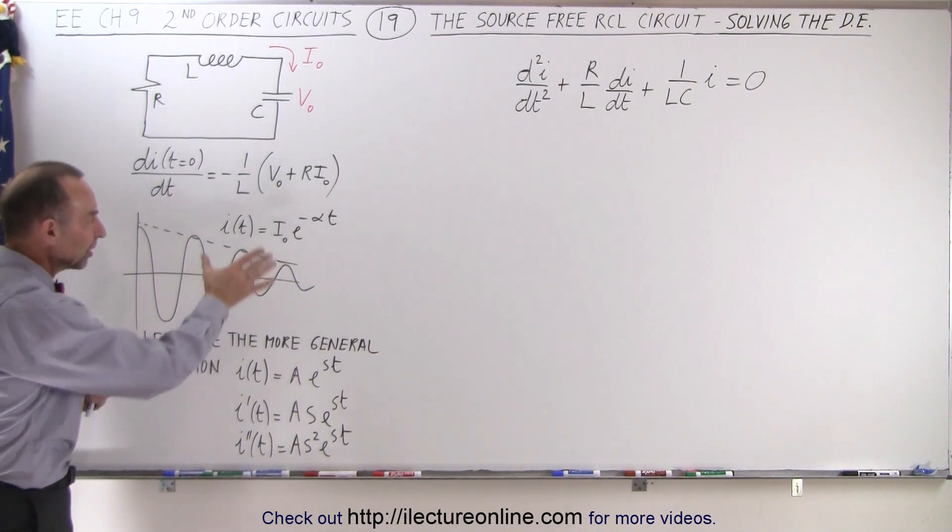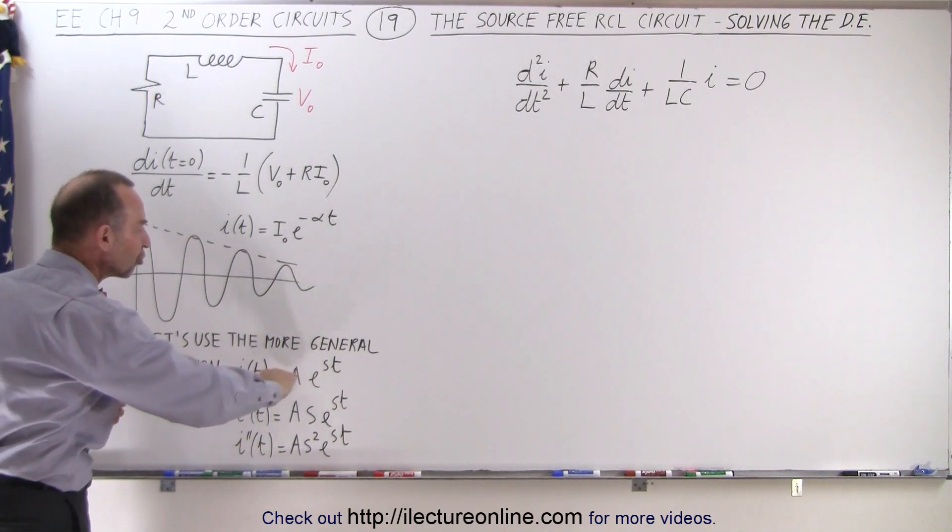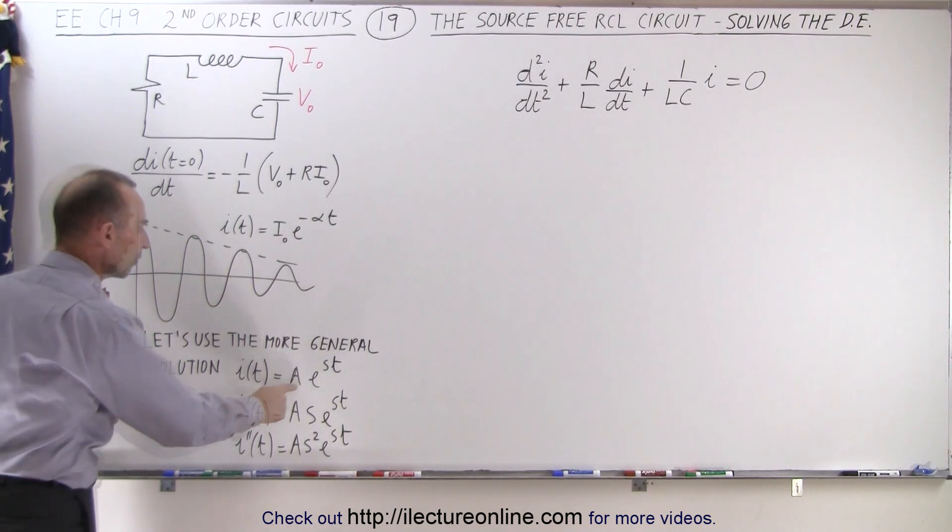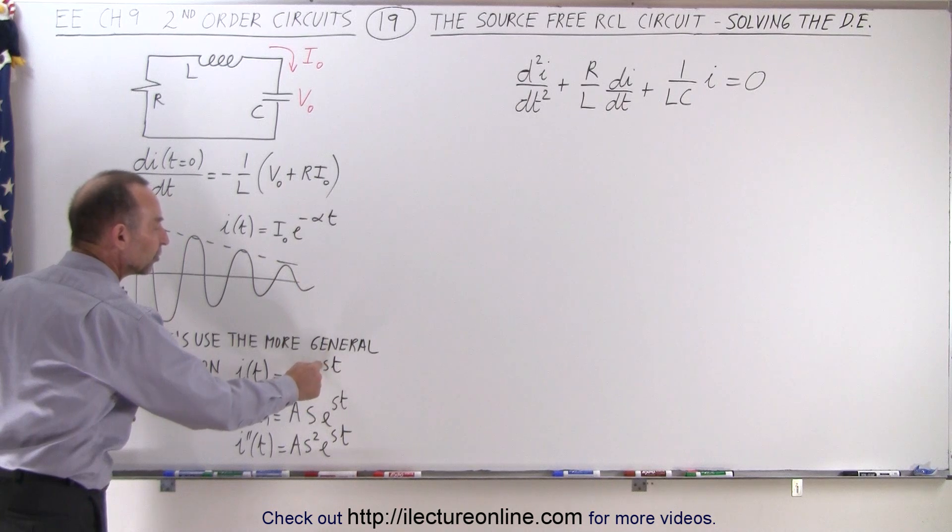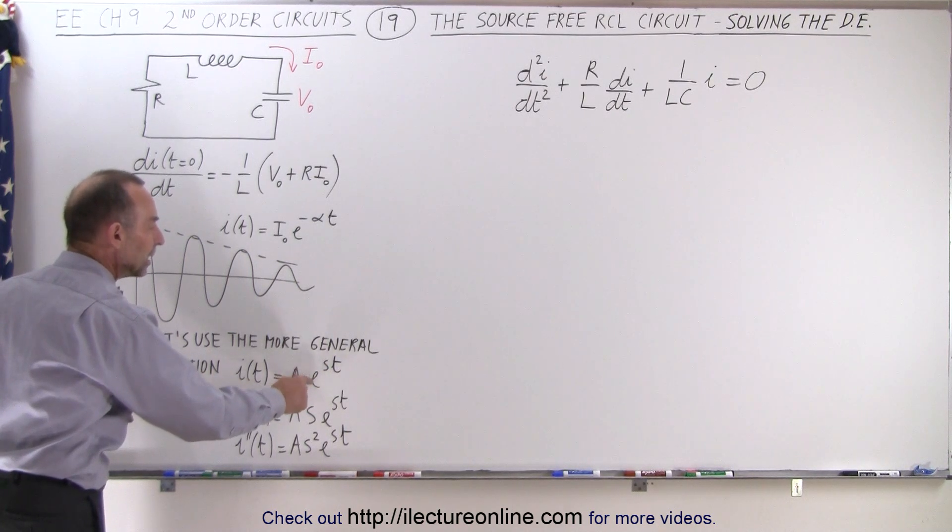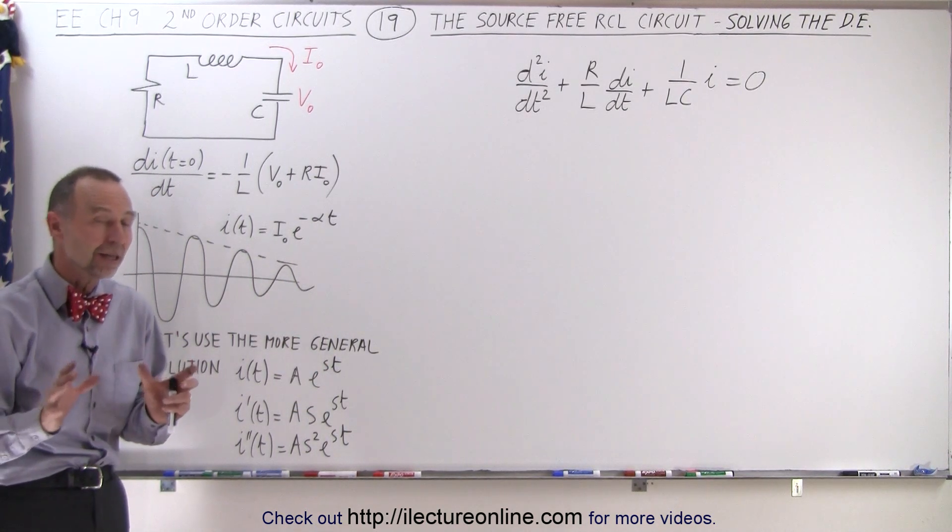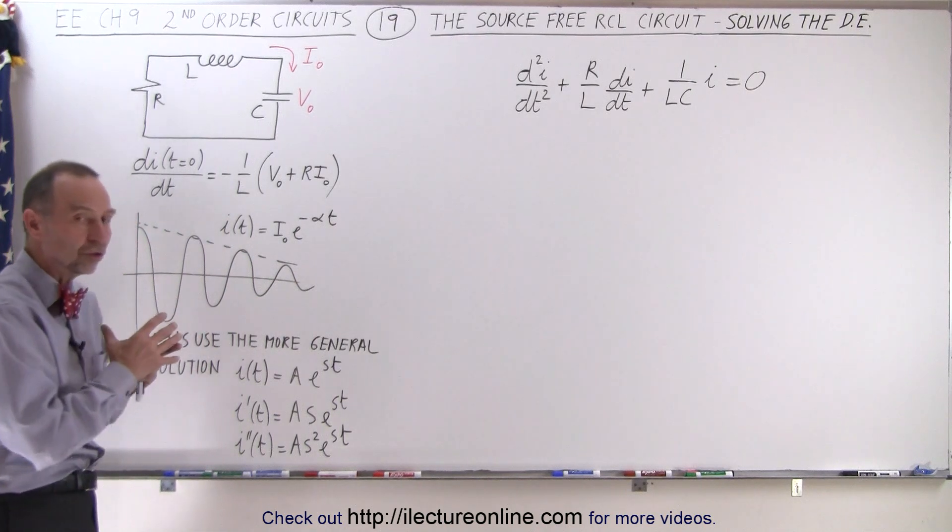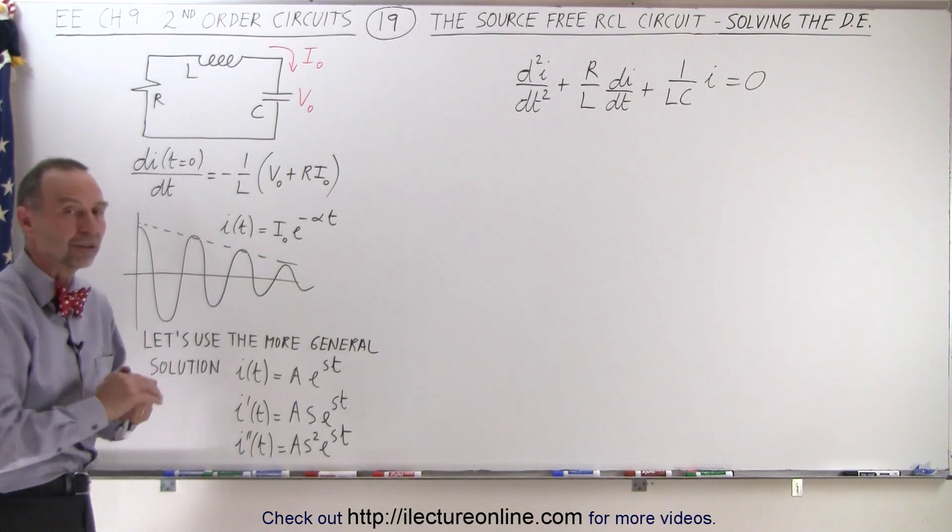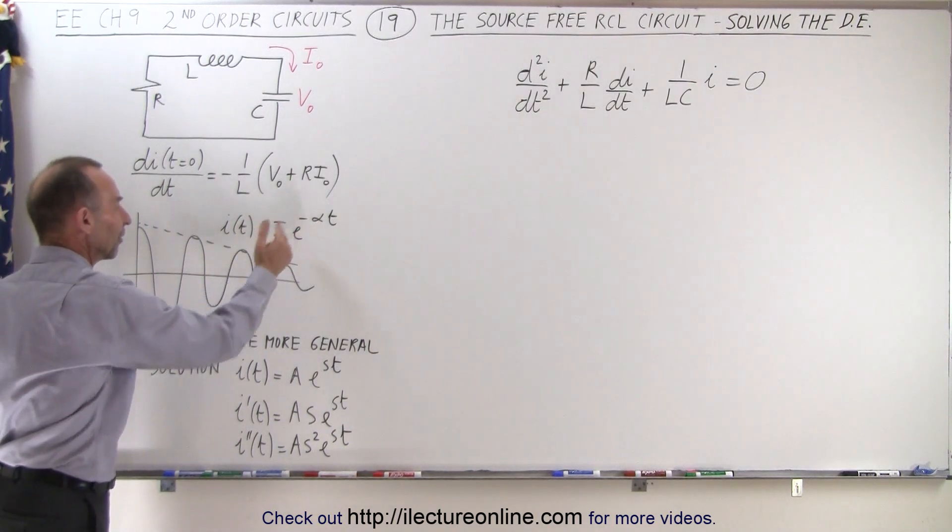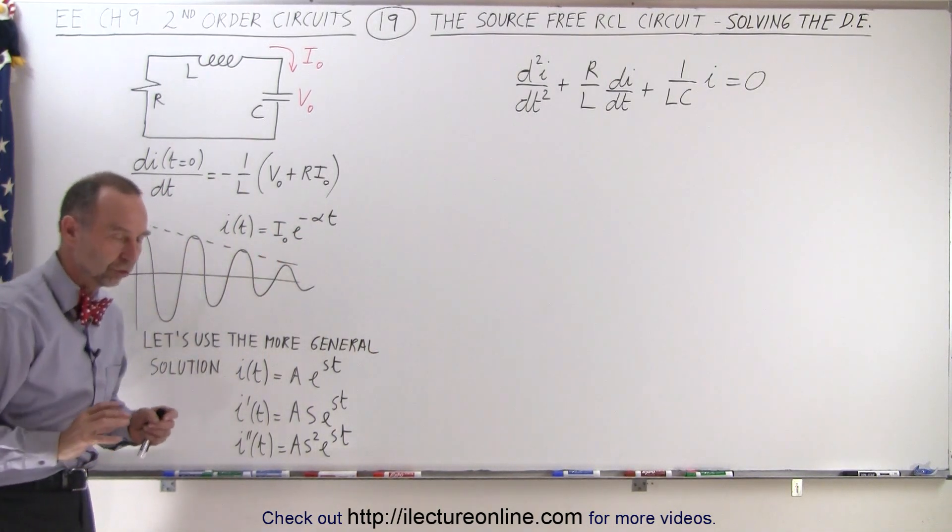Now instead of using that equation, we're going to use a more general solution. We're going to use amplitude for the current, and we're going to use a positive exponent there, e to the positive s times t, because there will be several conditions that we have to account for, and therefore it's better to use a positive s. In the end, we'll get the negative alpha solution for the proper conditions.